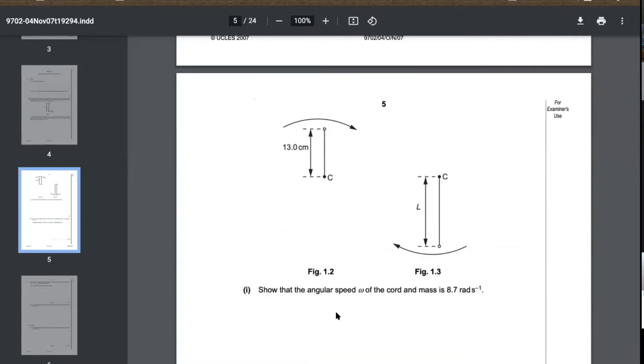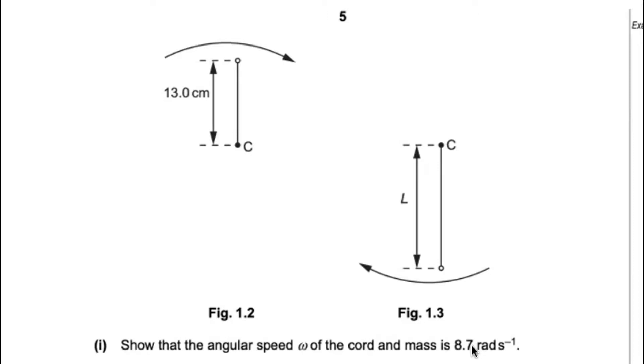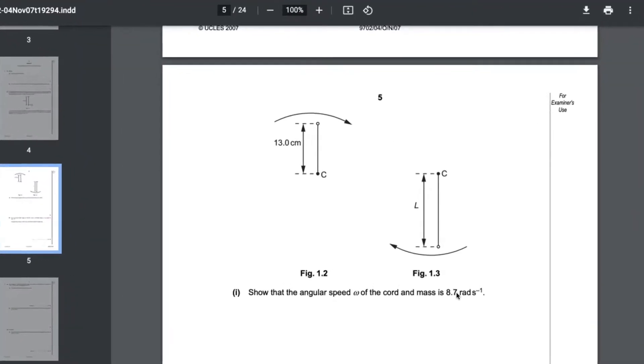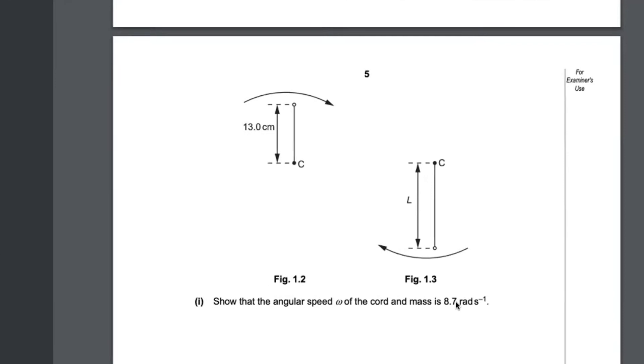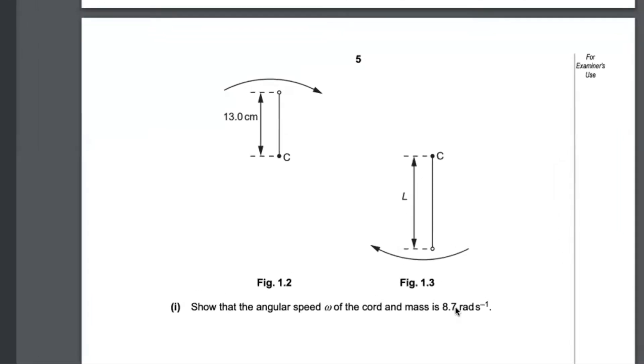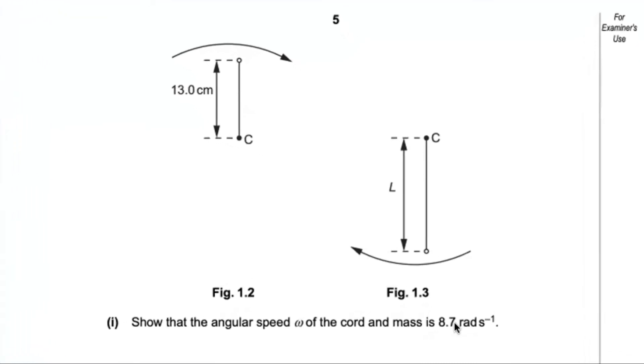The angular speed omega is 8.7. At the highest point with no extension, the weight equals the centripetal force. The resultant force equals weight minus tension. The centripetal force equation is m r omega squared equals 5 Newtons.